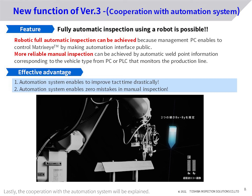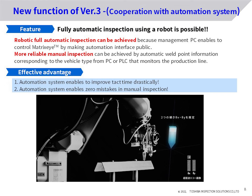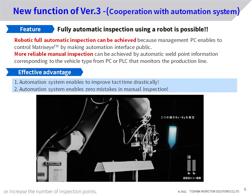Lastly, the cooperation with the automation system will be explained. Our research and development in this area has been conducted for many years, and with the latest software version 3, it has become possible to link with industrial robots and with PLCs that monitor lines. This makes it possible to stabilize quality through automatic inline inspection, shorten takt time, or increase the number of inspection points.